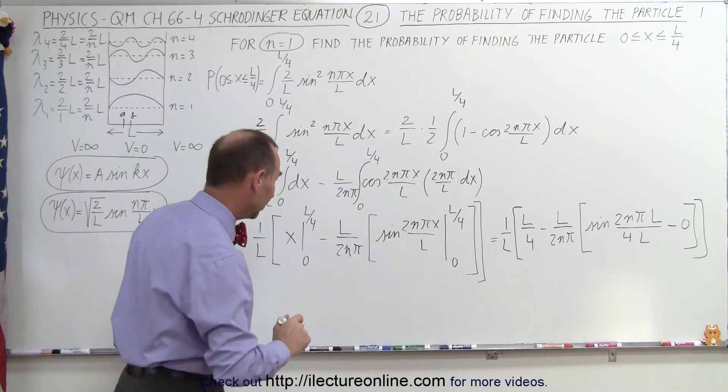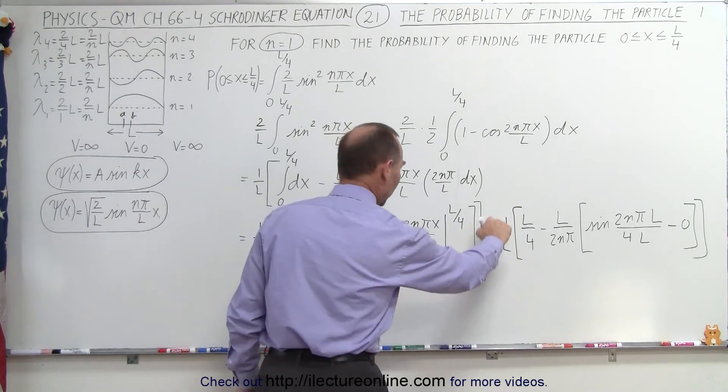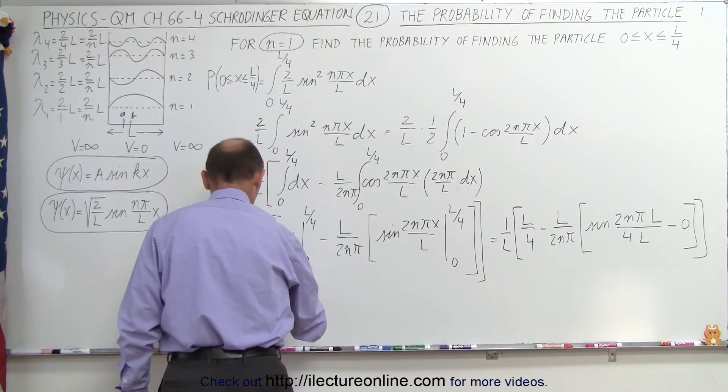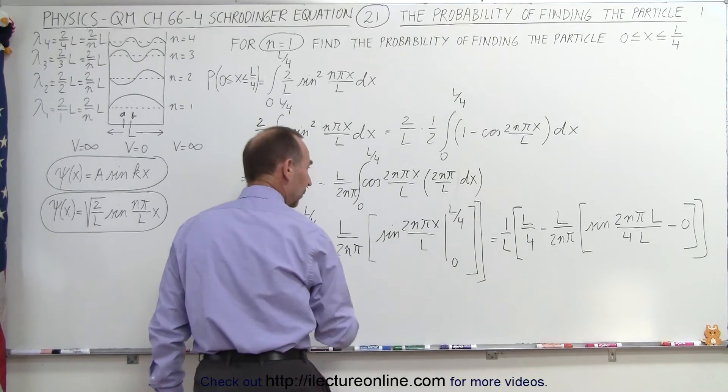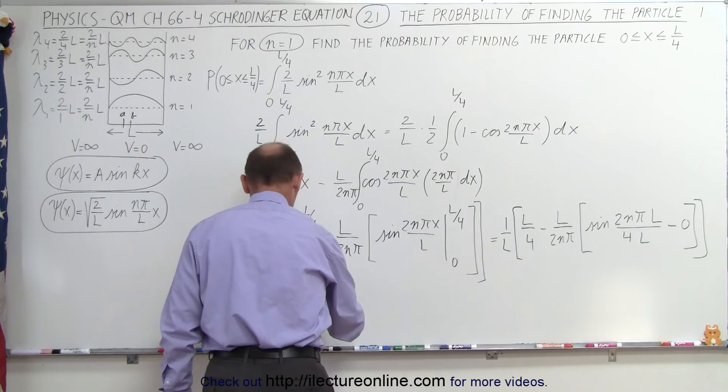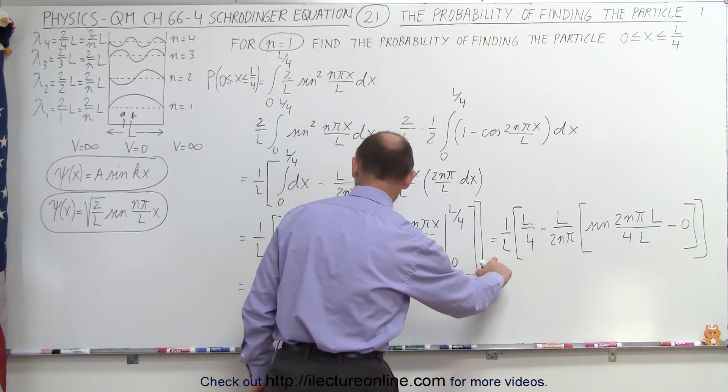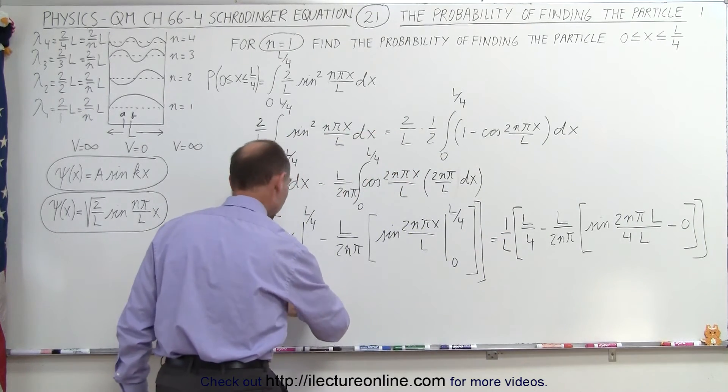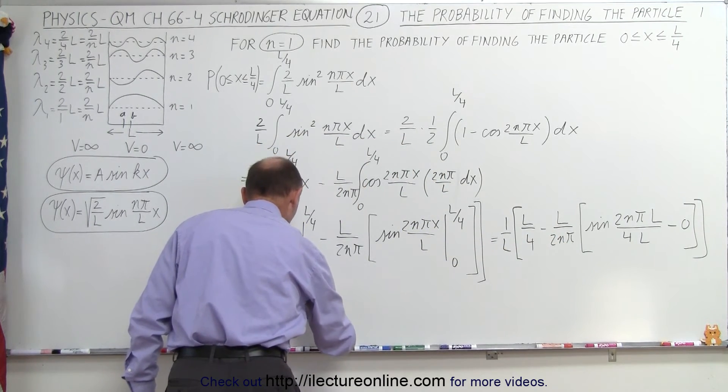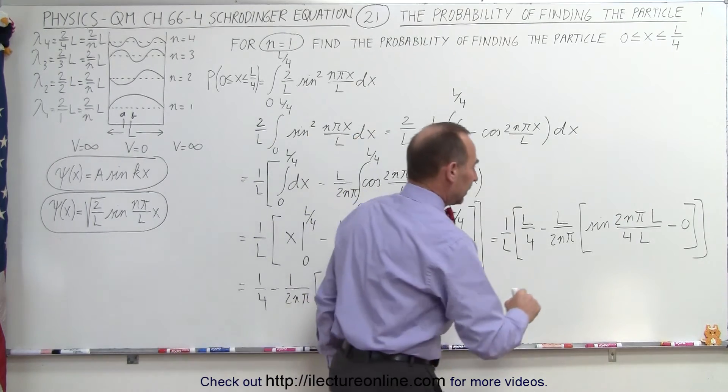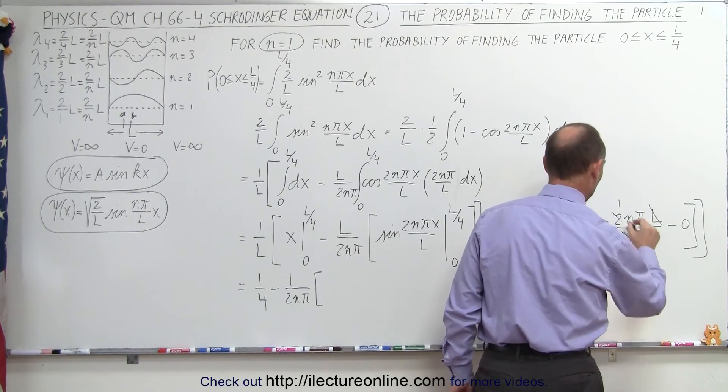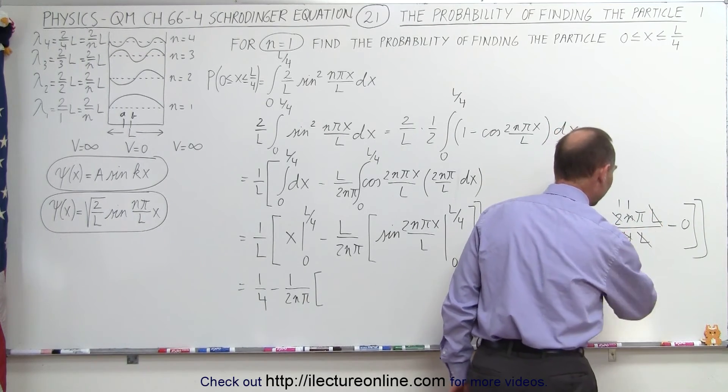Now let's do a little arithmetic here. So this is equal to 1 over L times L over 4, that gives me one fourth. And then we have minus L divided by 2N pi times 1 over L. So that would be simply 1, because 1 over L times this, the L disappears, so we get 1 over 2N pi. Here the L's cancel out, and the 2 and the 4 becomes a 1 and a 2, and it's 1, so we have pi divided by 2.